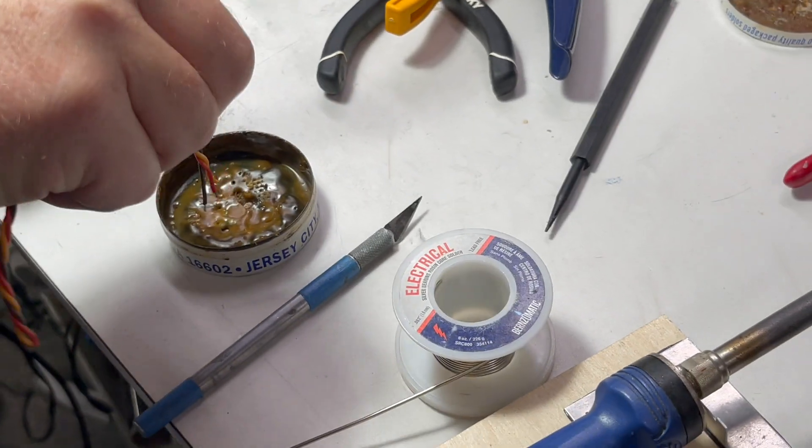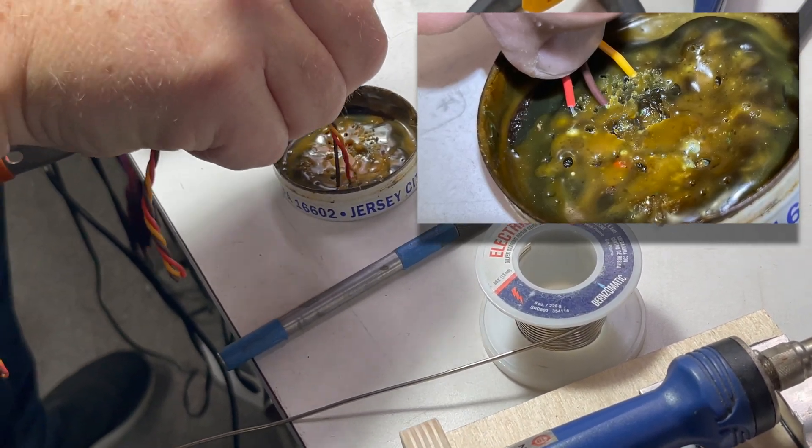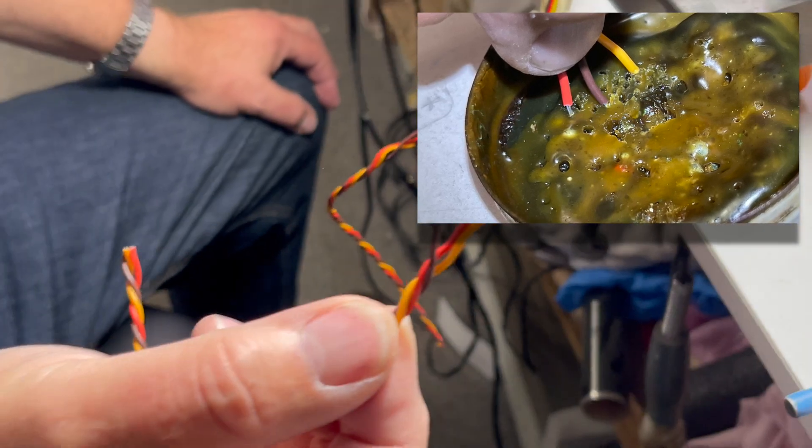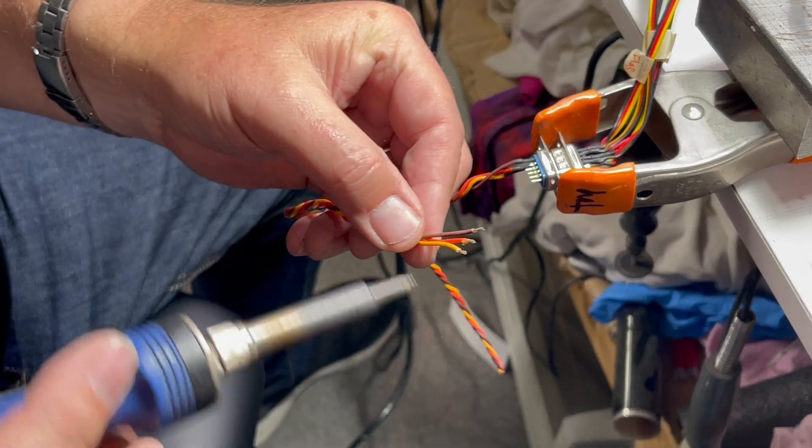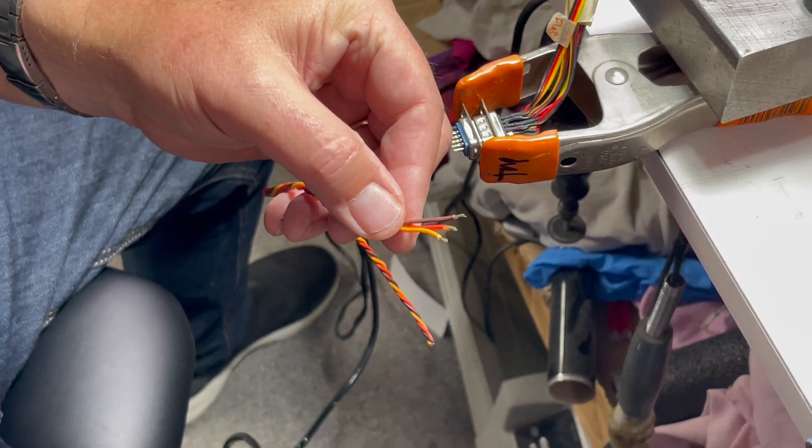What I'm going to do is I dip them in the rosin. Give a little bit of rosin on, just a little bit. And what I do is make sure that the wires are not separated apart when you dip them into the rosin.